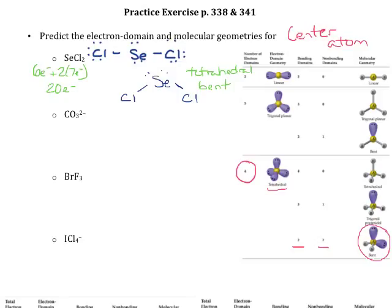Let's look at the next one — we now have an ion, the carbonate ion CO₃²⁻. Checking the periodic table, carbon brings 4 valence electrons. We've got 3 oxygens each bringing 6. The negative 2 charge means we've got 2 extra electrons. So that gives us a total of 24 electrons to work with in this structure.